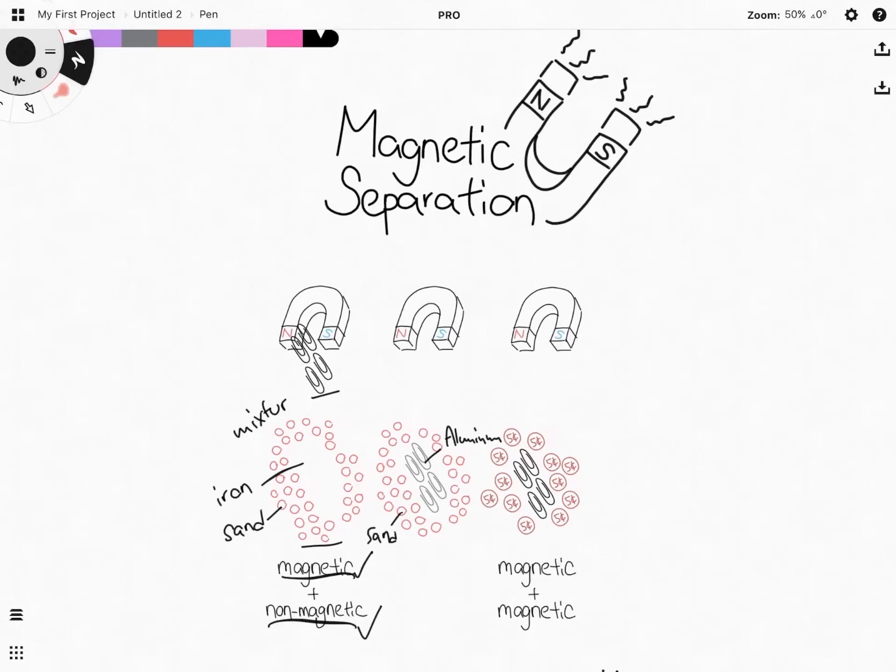Have a think. Okay, the answer is no. I will not be able to separate this mixture because the sand is non-magnetic and the aluminum clips are also non-magnetic.